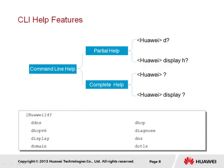VRP includes help features that support user command line configuration and navigation. The help features come in two forms. The first is known as partial help, whilst the other represents complete help. In both cases, the question mark is used to invoke the help function. With partial help, the question mark is placed immediately after the entered word or character, and will provide a list of possible commands that match the entered string. We can see an example where 'D' is followed by a question mark, giving a list of possible completions. When the command is followed by a space and a question mark, the complete help function is used, which will list keywords associated with that command and a simple description of the function.